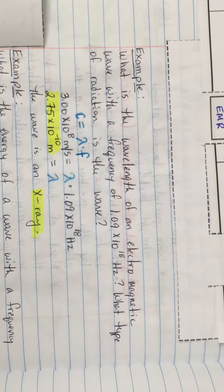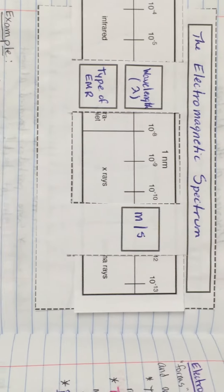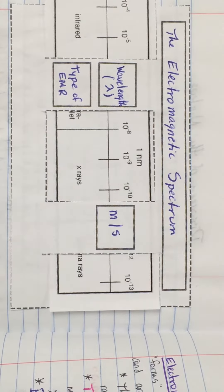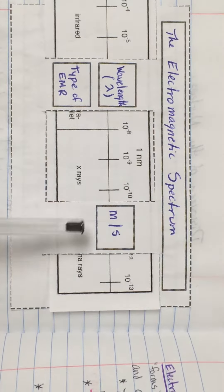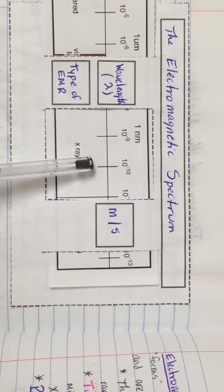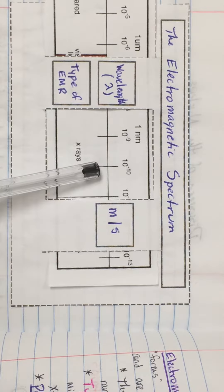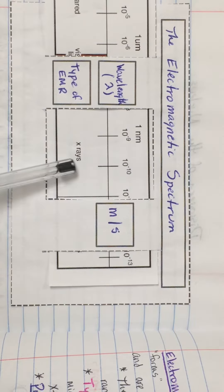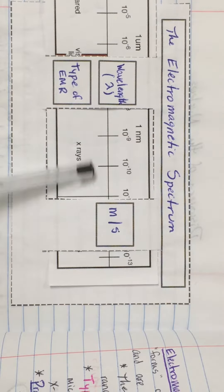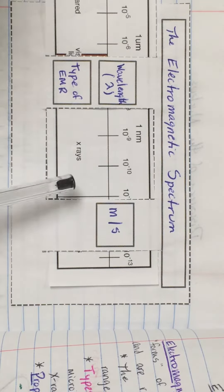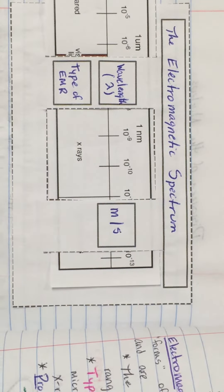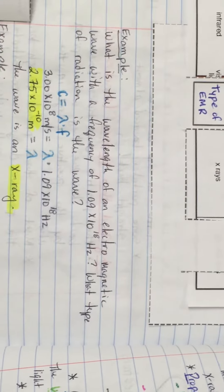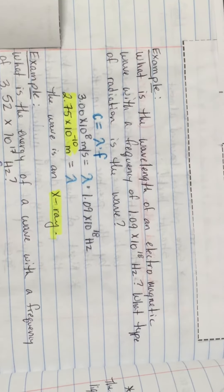The second part of the question asks what type of radiation the wave is. Looking at our electromagnetic spectrum, 1 times 10 to the negative 10th meters falls well within the x-ray region of the electromagnetic spectrum. So we're going to identify this wave as an x-ray.